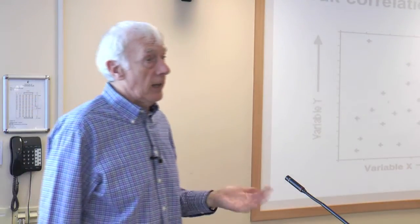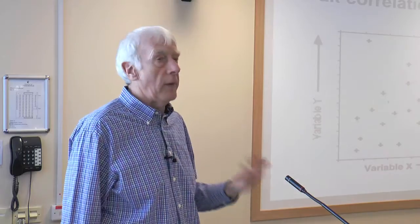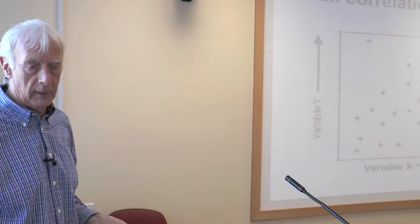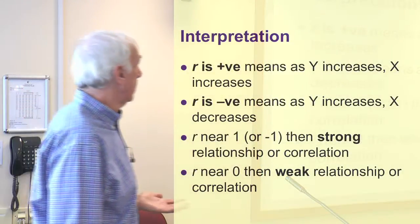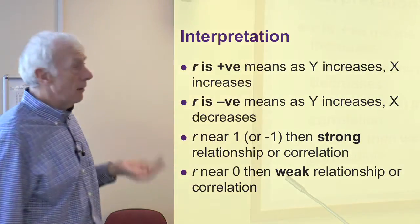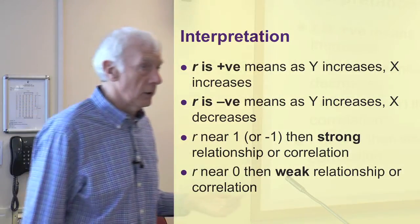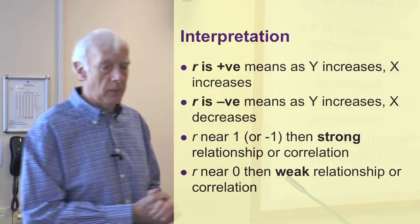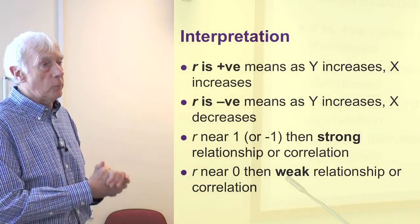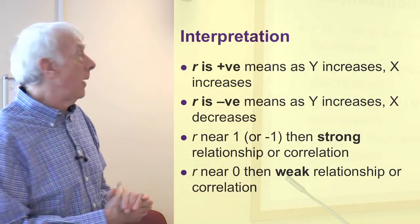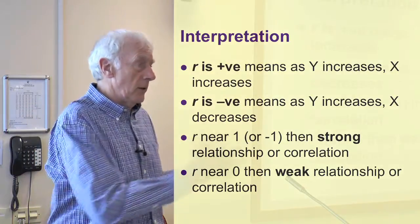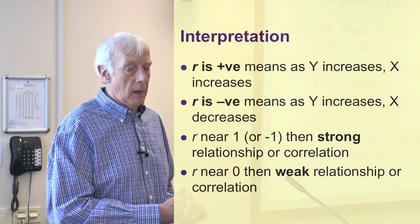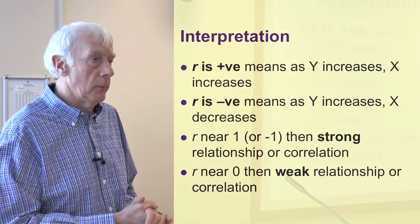Just looking at the scattergram can immediately give you an idea about whether there's a strong relationship. To summarize: when Pearson's r is positive, as one variable increases so does the other; when it's negative, as one increases the other decreases. When the value is near 1 or near minus 1, it's a strong relationship; when it's near zero, it's a weak relationship between the two variables.